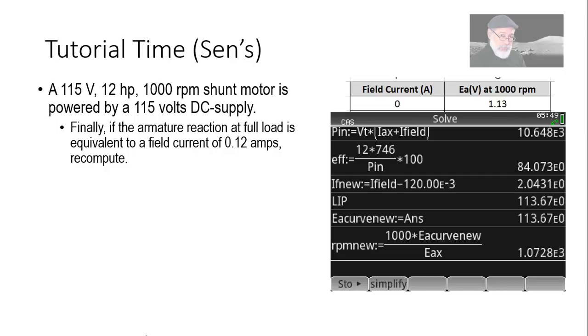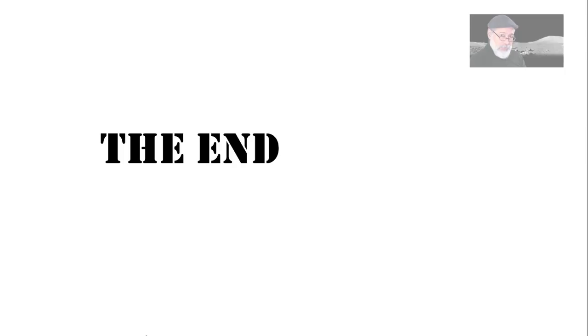From there, we deduce that the new RPMs are 1073 rpm. You see, the machine is running faster now that it's loaded than when it was idling. Why? Because there is armature reaction. The flux has decreased, and the velocity has gone up. And that is all, my friends. Thank you very much, and I hope to see you all in our next video.